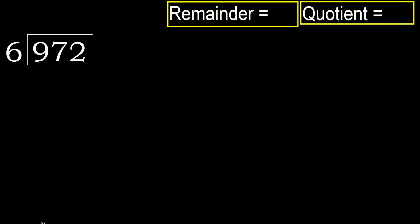972 divided by 6. 9 is not less, so we start with 9. 6 multiplied by which number is nearest to 9 but not greater? 6 multiplied by 2 is 12 — 12 is greater. Multiply by 1: 6 is not greater. Subtract: 9 minus 6 equals 3.